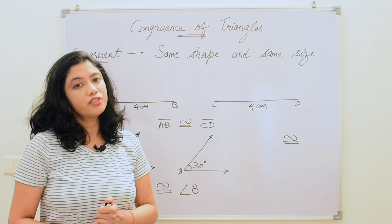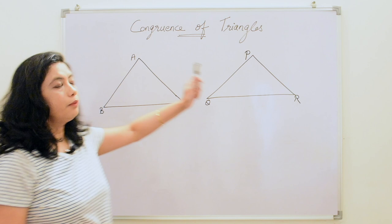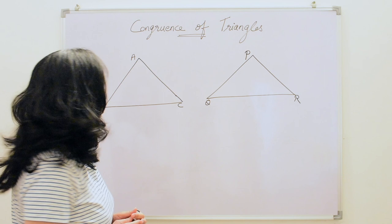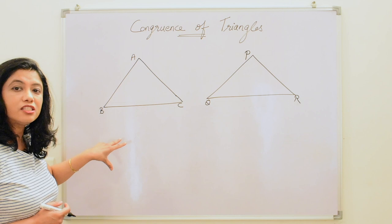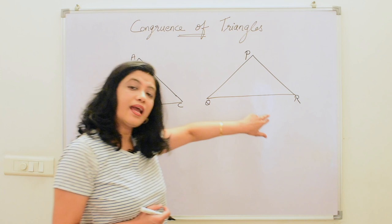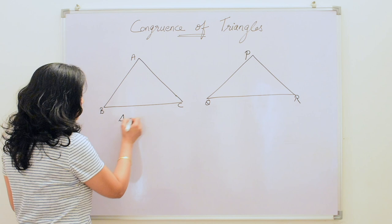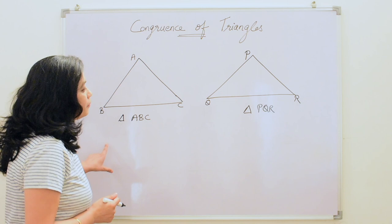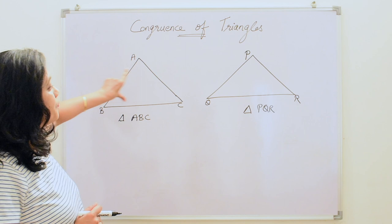Now we will study congruency of triangles. Here we have two triangles: triangle ABC and triangle PQR. When two triangles are congruent they have the same shape and same size — they are exact copies of each other. If two triangles are congruent, all three sides of one triangle will be equal to the corresponding sides of the other triangle, and all the angles of one triangle will be equal to the corresponding angles of the other triangle.